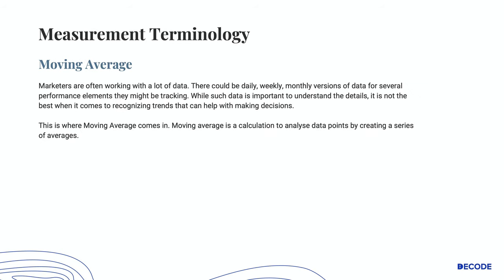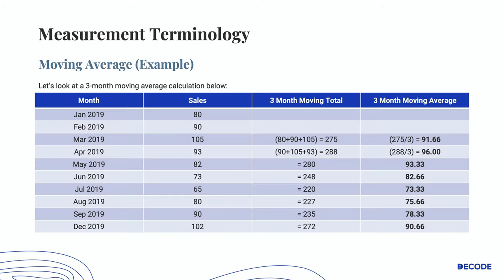The next term is Moving Average. Marketers are often working with a lot of data — there could be daily, weekly, monthly versions of data for several performance elements they might be tracking. While it is important to understand the details, it is not the best when it comes to recognizing trends that can help with making decisions. This is where Moving Average comes in. Moving Average is the calculation to analyze data points by creating a series of averages. I am going to show you an example with the three-month Moving Average. The number of months can change, or the unit can change from months to days to weeks, depending on the kind of trend you are looking for.